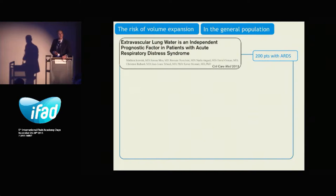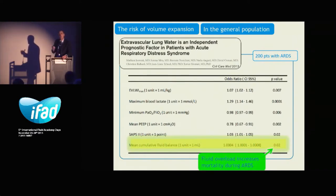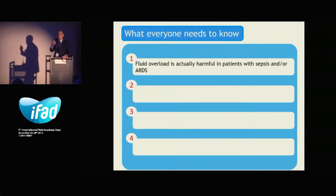The same is true in ARDS. In a study we conducted in 200 ARDS patients, the cumulative fluid balance increased mortality independently from the other markers of severity. Fluid overload increases the mortality of ARDS patients, and it means we should develop all possible efforts to reduce the amount of fluid we give to our ICU sepsis and ARDS patients.